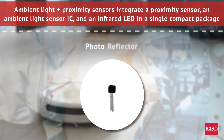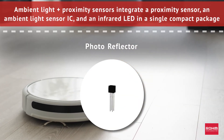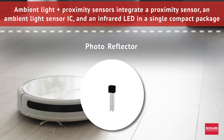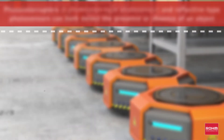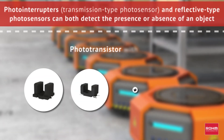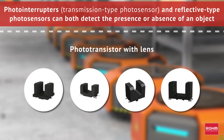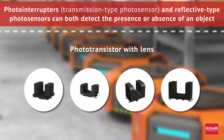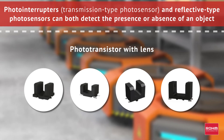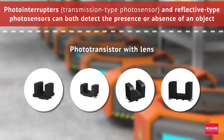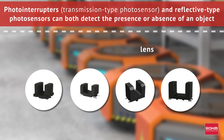Photo reflectors can also detect the presence or absence of an object by detecting the reflection of light in the same way. Roam photo interrupters are transmission type photo sensors that integrate optical receiving and transmitting elements in a single package and can detect the existence or absence of objects by intercepting light.